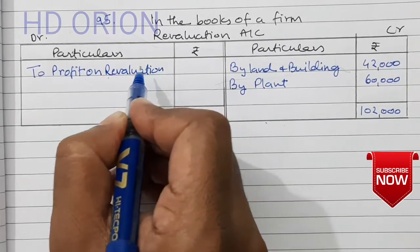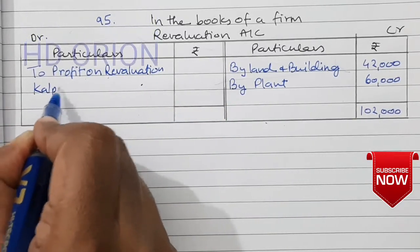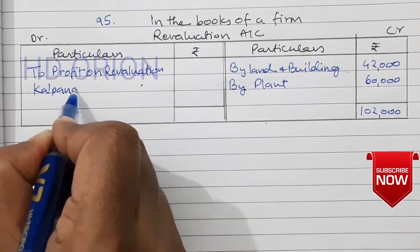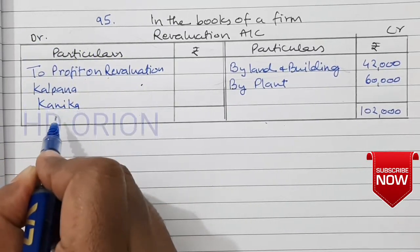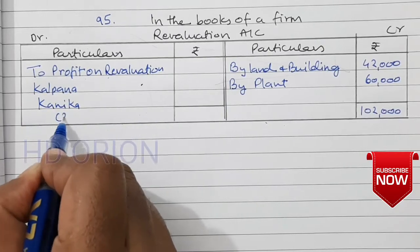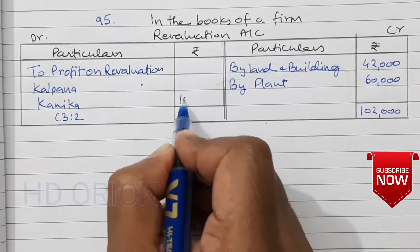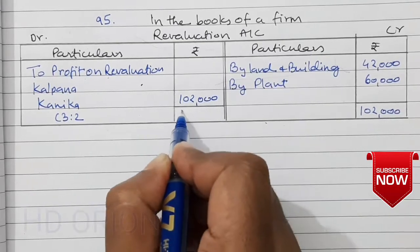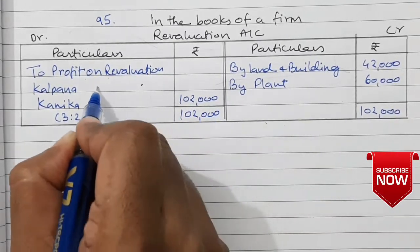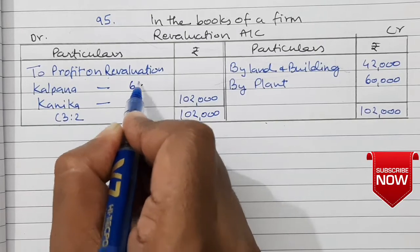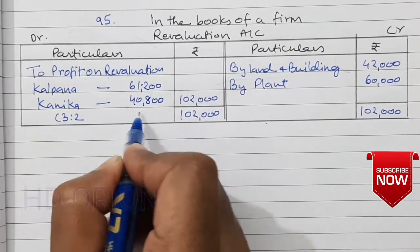The profit on revaluation will go to partners Kalpana and Kanika in the ratio 3 is to 2.